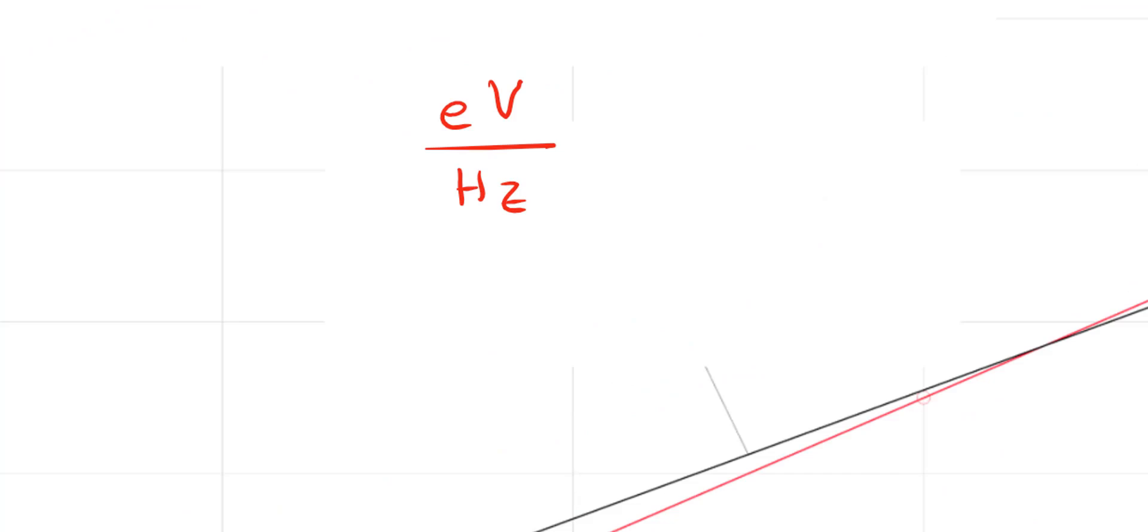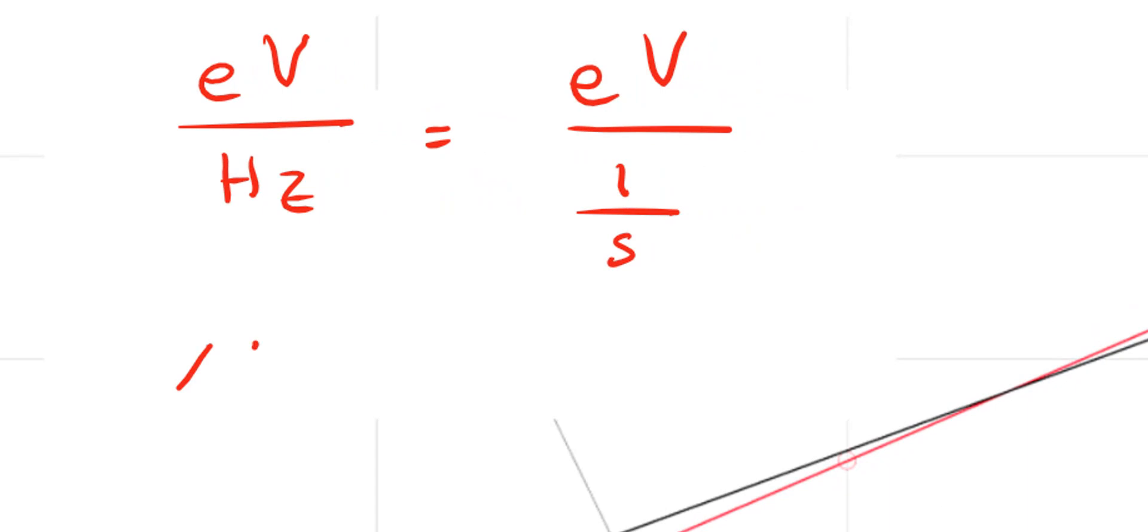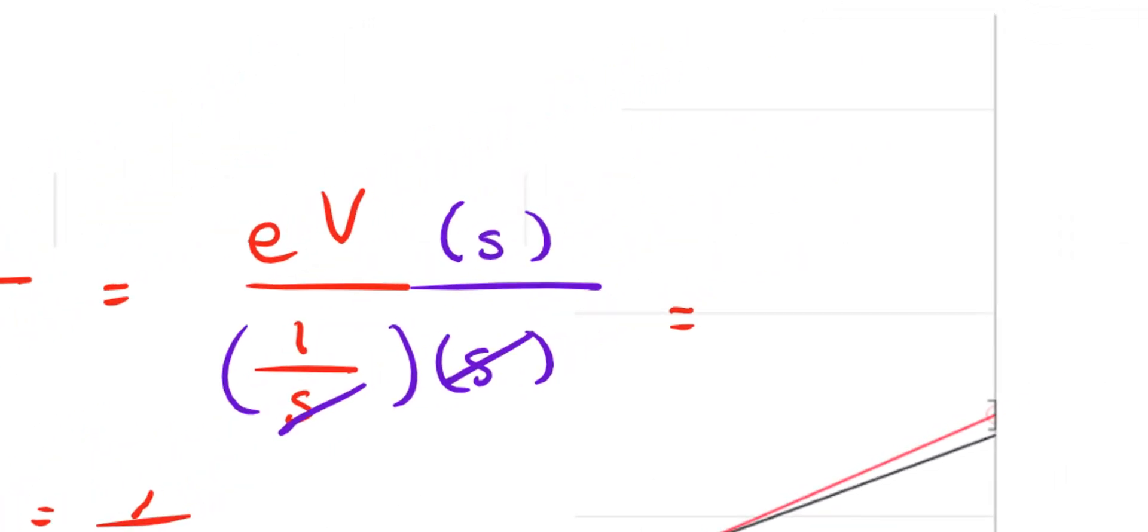So I have electron volts over Hertz, but a Hertz is 1 over a second. So that means I have electron volts over 1 over a second. But 1 over a second, it's a compound fraction. Nobody likes fractions, let alone compound fractions. So I'm going to go ahead and multiply the top and the bottom by seconds. The seconds will cancel out in the bottom, and I'm left with, voila, electron volts times seconds.